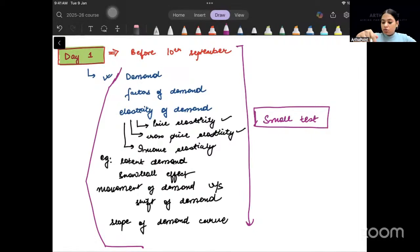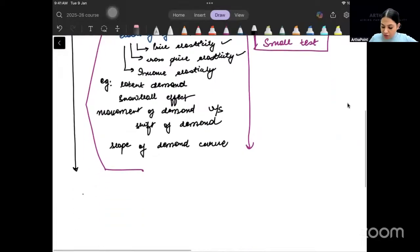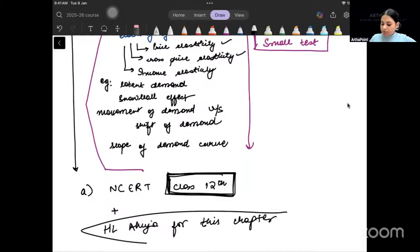Then you will go ahead and do the next topic. Now which book can you refer for this? My suggestion is you do NCERT Class 12th. NCERT will help you understand what demand is. You can do HL Ahuja for this chapter.